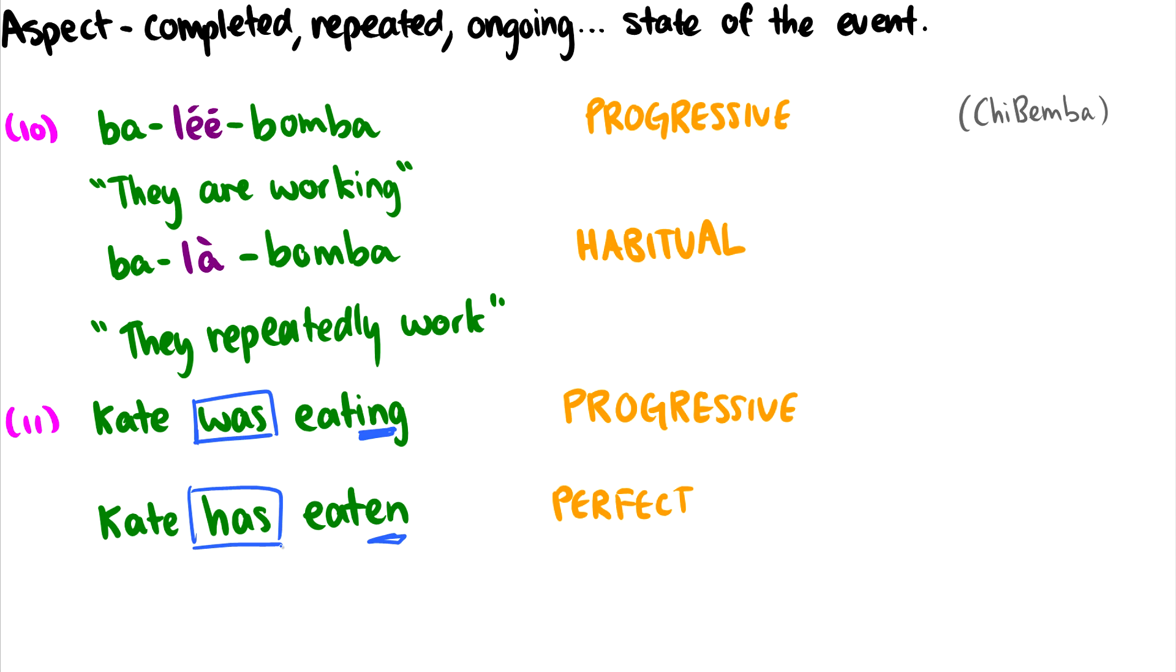But there are other languages that have more than this. So for instance, in Shibamba, 'they are working,' so they have the progressive as well, but they also have this other type of aspect called habitual aspect. So instead of 'balé bomba,' they would say 'bala bomba,' for 'they repeatedly work.' So this is a habitual thing. They have this marker that says habitual. In English, we just have this word 'repeatedly.' But in the morphology of verbs, or the syntax of verbs in Shibamba, they have an infix that is the habitual marker. So that's something that we don't have in English.